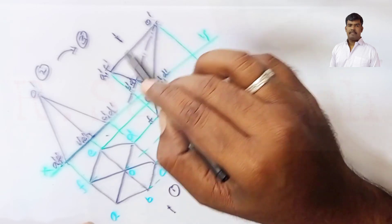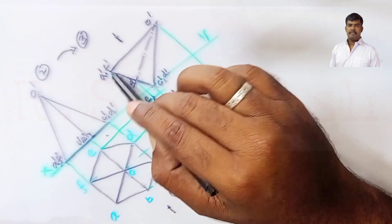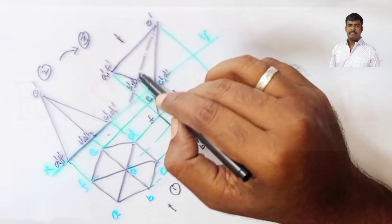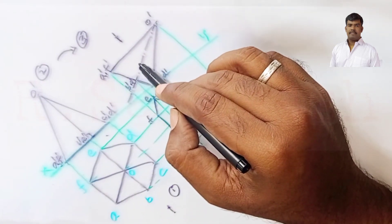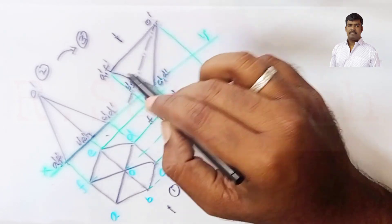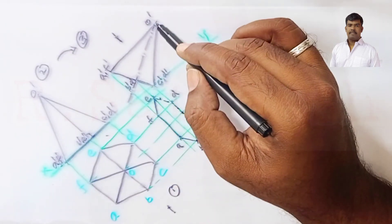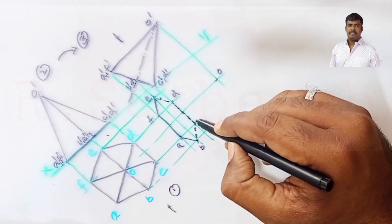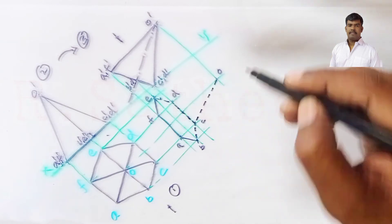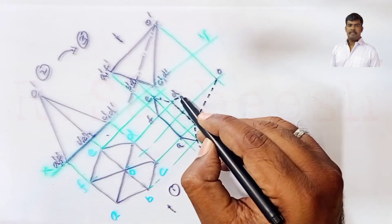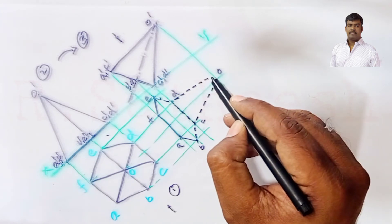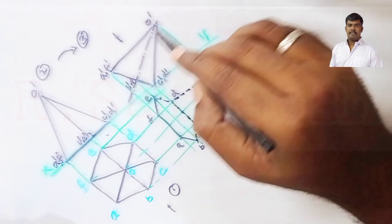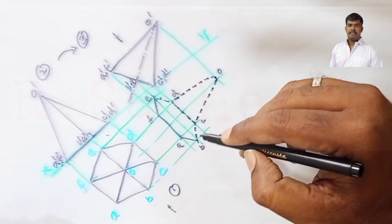The slant edge O-A is visible, O-F is visible. Similarly O-B and O-E are visible. Above the axis, all slant edges are visible. The bottom-most edges O-C and O-D are invisible. So O-C is a hidden line drawn by H pencil because it is an invisible object. The remaining visible edges are O-A, O-F, O-B, and O-E.